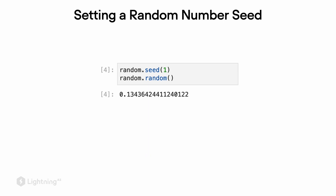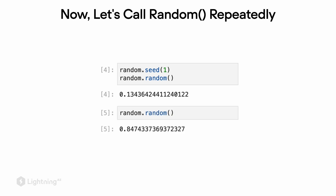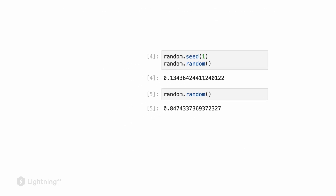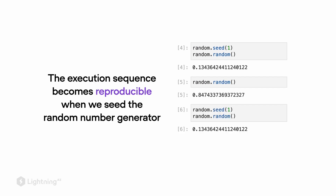No matter who runs your code, you will always see the same results — the same random number generated by random.random. However, this does not mean that random.random always generates the same number. If we call random.random twice, the second number will differ from the first. That's by design, because we still have a random number generator. Using a random number seed like random.seed makes our sequence of random calls reproducible, so each time we execute the same number of random.random calls, we will get the same results.